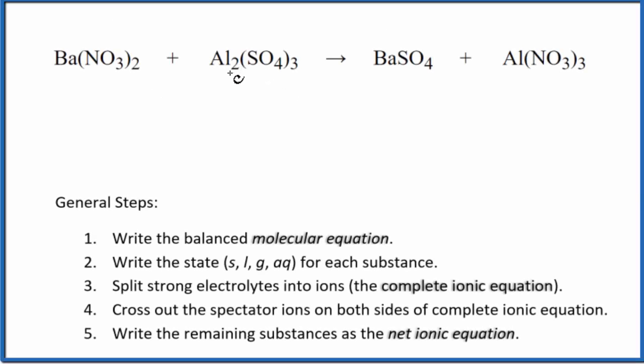In this video, we'll write the balanced net ionic equation for Ba(NO3)2 plus Al2(SO4)3. This is barium nitrate, and this is aluminum sulfate.